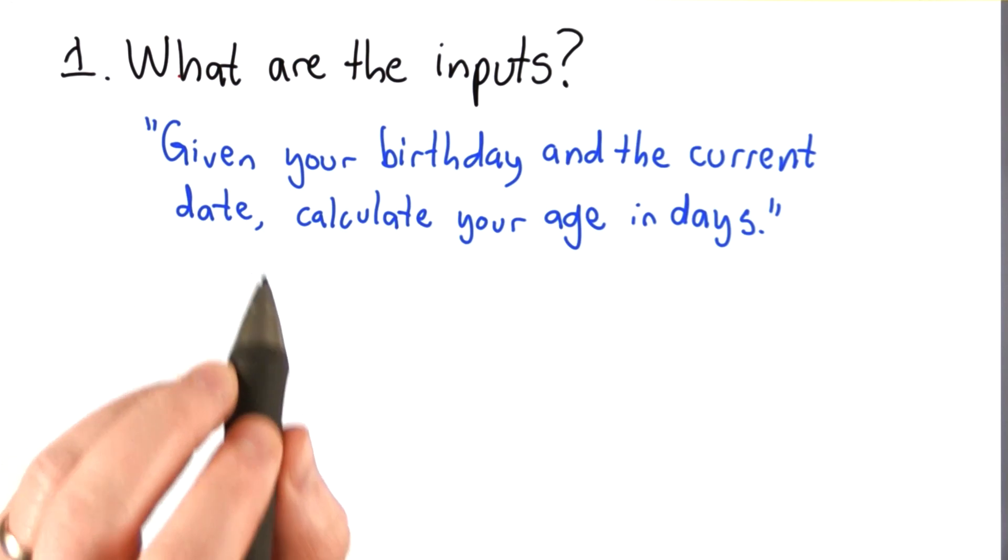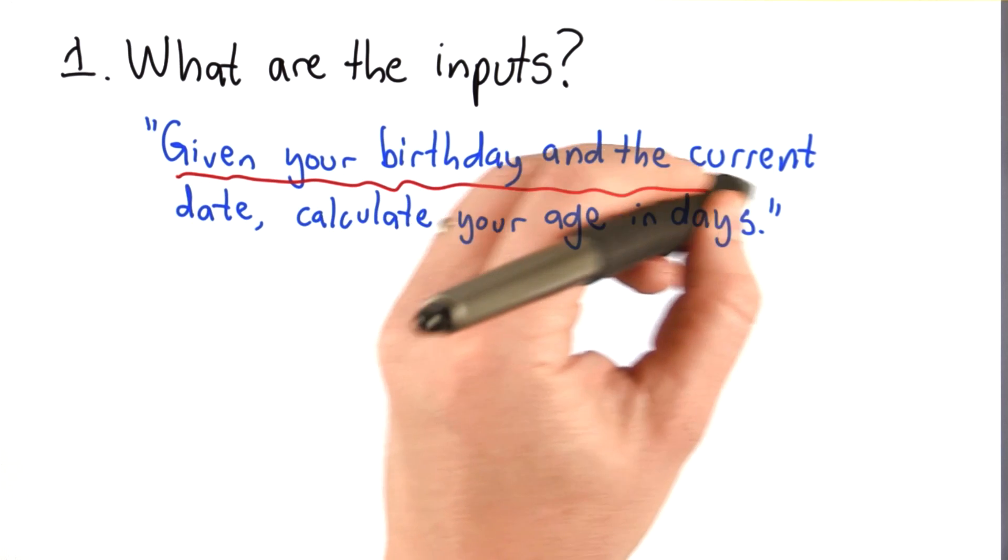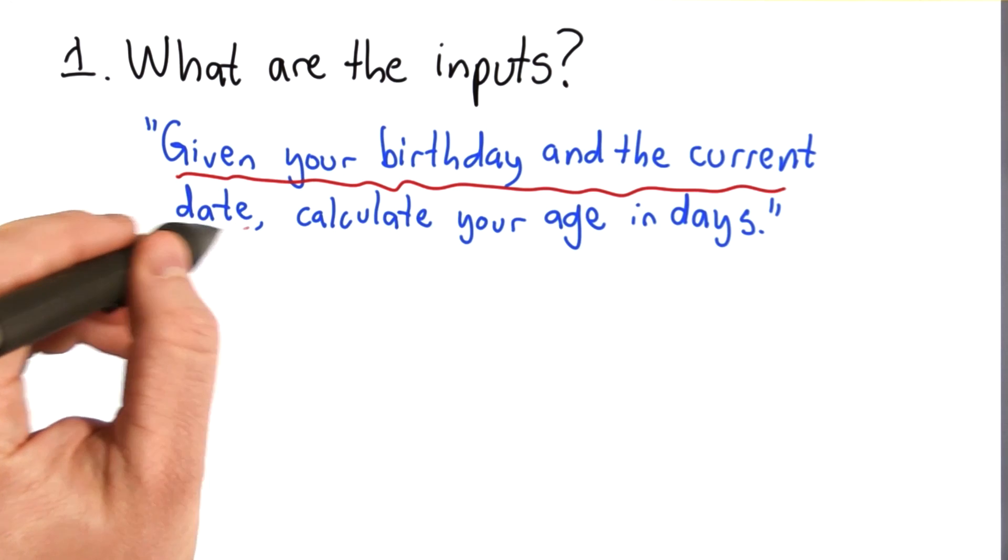So the first question we need to answer for any problem is, what are the inputs? For this problem, they're fairly clearly stated. It's given your birthday and the current date, well that's the input to the problem.